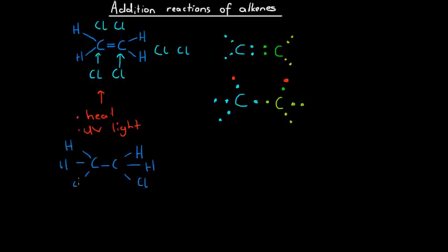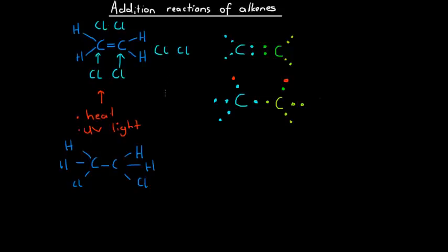What we end up with is 1,2-dichloroethane, because the chlorines are on different carbon atoms. That's a basic addition reaction — we're adding a chlorine molecule across the double bond. Similarly, we can add any halogen molecule, or things such as hydrochloric acid, where hydrogen goes onto one carbon and chlorine onto the other. Basically, we can add any molecule made up of two atoms, where both atoms need to be one electron short of a full outer shell — so the halogens and hydrogen both fit that category.